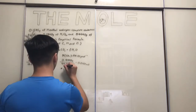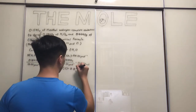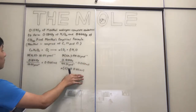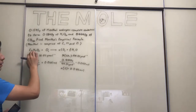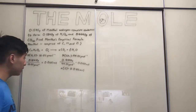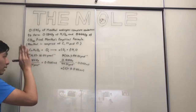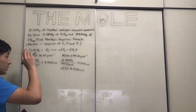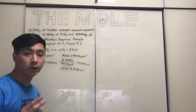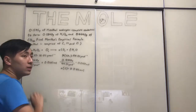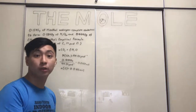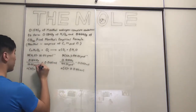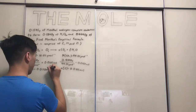So the number of moles of carbon is 0.0102 moles. Now let's do the same for hydrogen. In a water molecule there are two atoms of hydrogen, and since we have 0.0102 moles of water molecules, we multiply by 2, giving us 0.0204 moles of hydrogen.